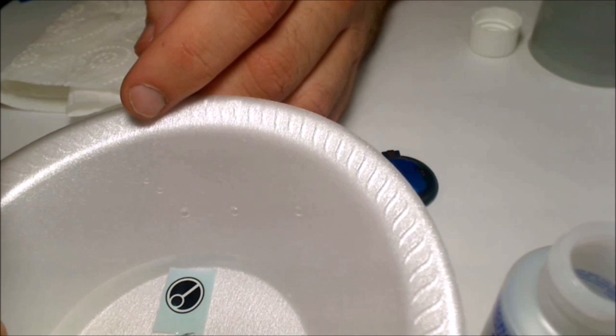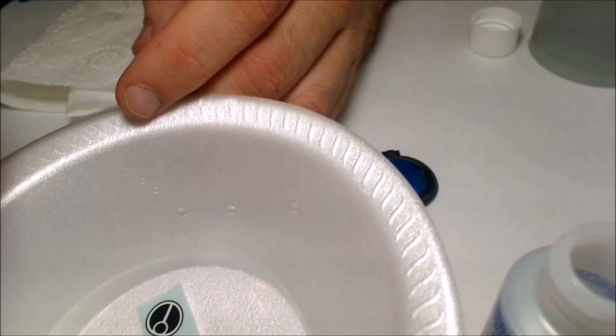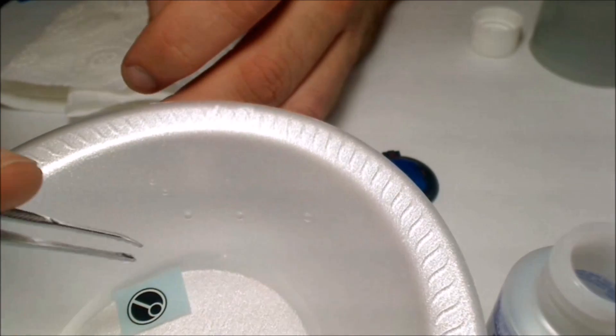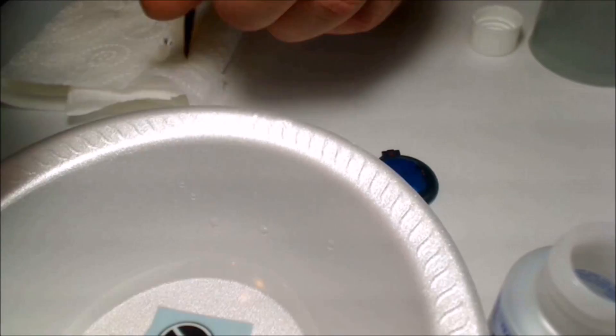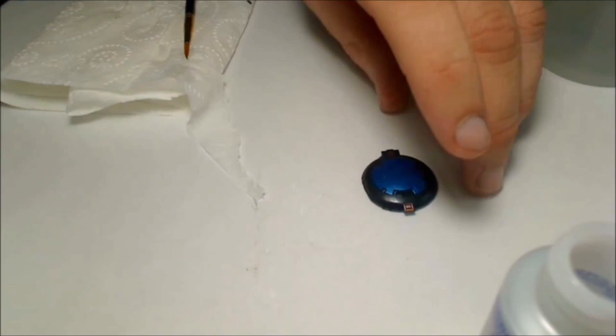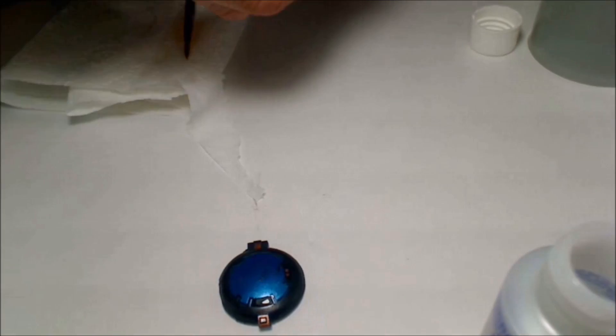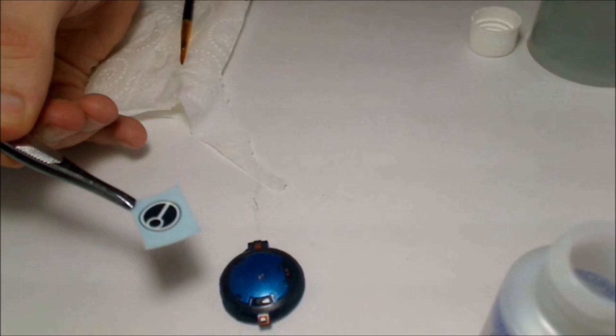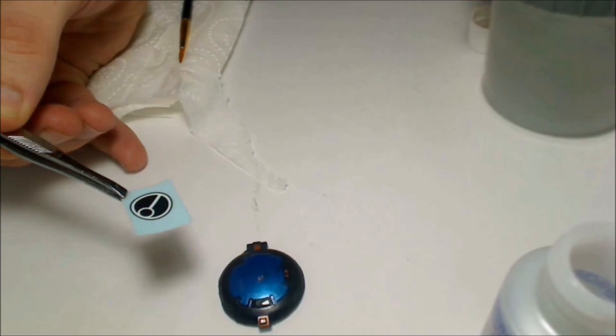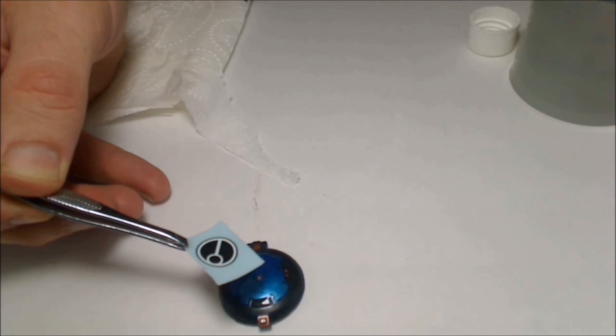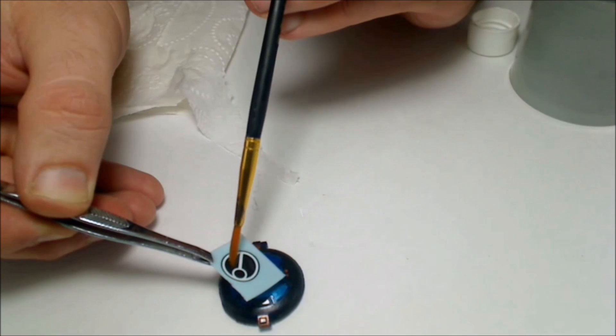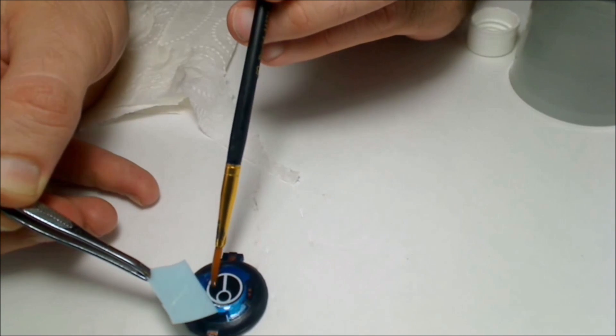So you want to make sure your decal can slide around on the paper. Once it can, you'll pull it out of the water. I had a little trouble here, but grab the actual paper with your tweezers and then get your brush, put some water on it or some Microset, either one. I just put some water on it and then you're going to slide it off the transfer sheet and onto your model.